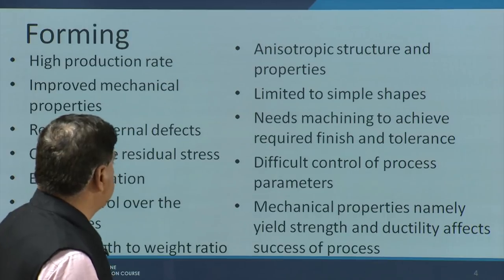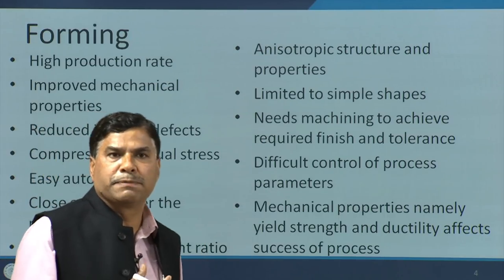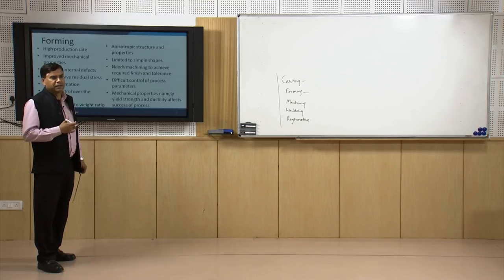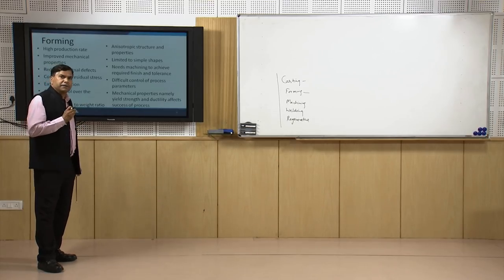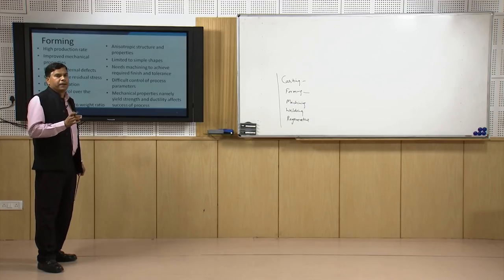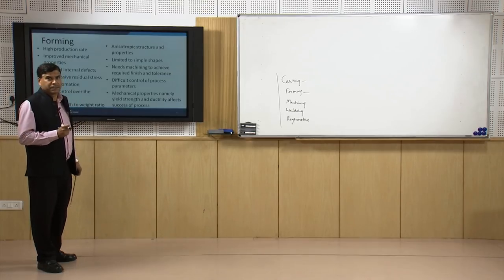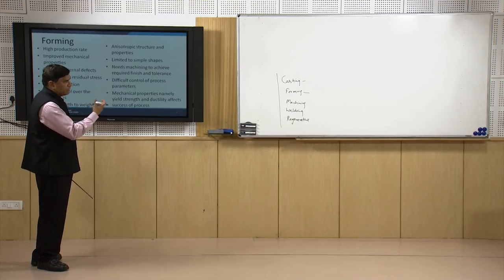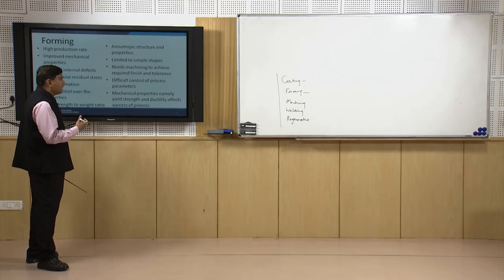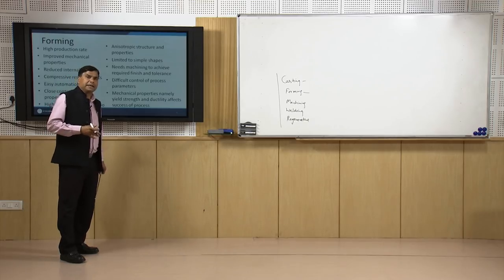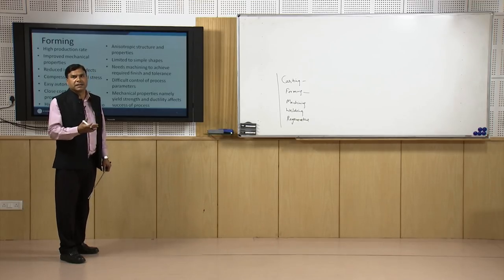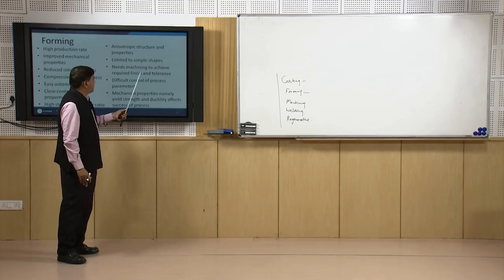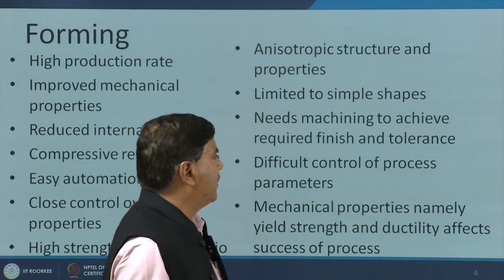The finish and tolerance achieved with forming is also not that good, especially when hot forming processes like hot rolling or hot forging are used. During processing the material expands at high temperature and when it cools down shrinkage takes place. This changing dimension of the component due to heating and subsequent cooling in hot forming processes makes control over dimensions difficult. Increased temperature also leads to increased oxidation tendency of the metal, which reduces surface quality — and therefore machining is needed to achieve the required finish and tolerance.